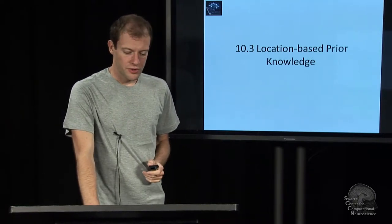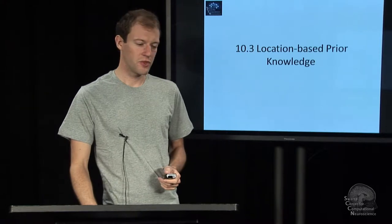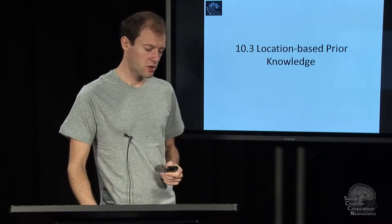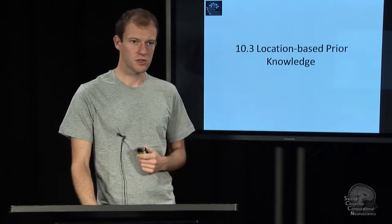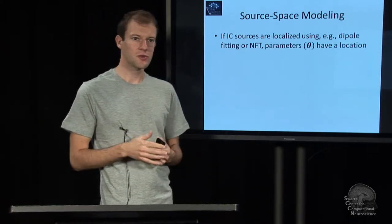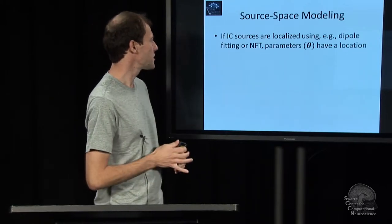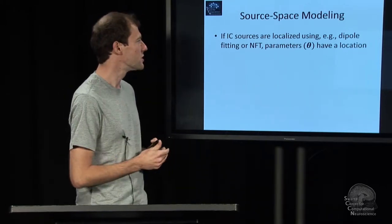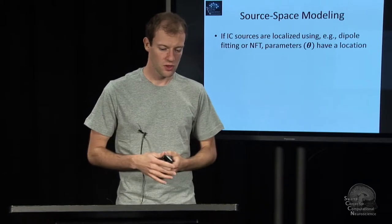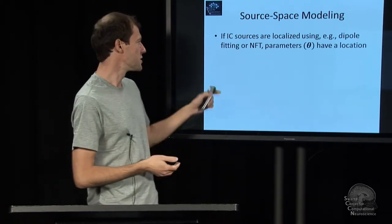The third module of this lecture talks about a form of quantitative prior knowledge that complements what we just discussed previously. It's about location-based priors. If you manage to locate an independent component source, for example using dipole fitting, then you have the 3D position and orientation, or using